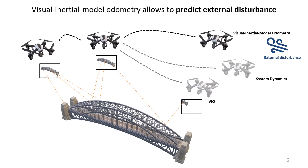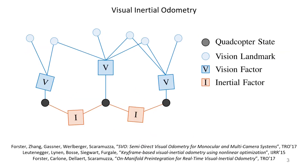Additionally, Visual Inertial Model Odometry systems exploit the mismatch between the motion predicted by the dynamics and the actual motion to estimate external disturbance. In this work, we use a factor graph representation to formulate the state estimation problem.